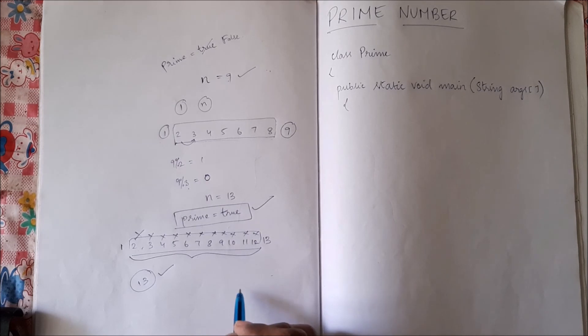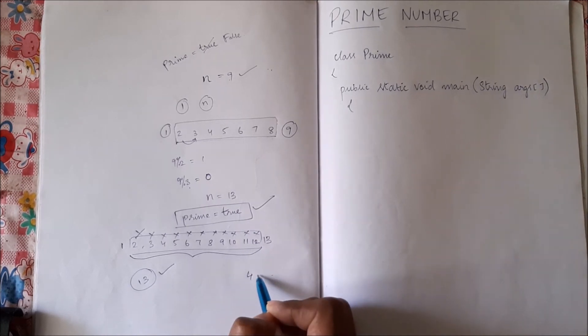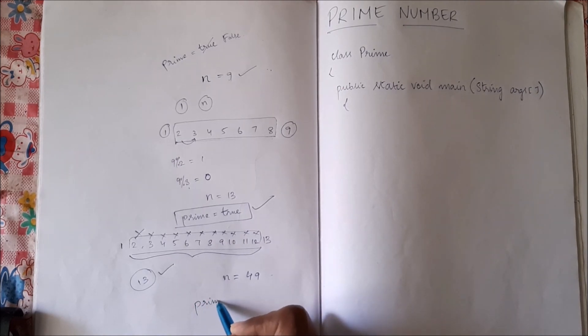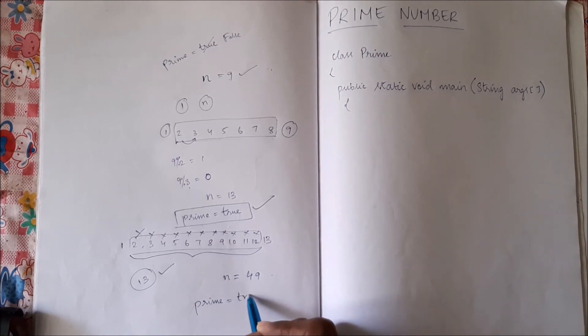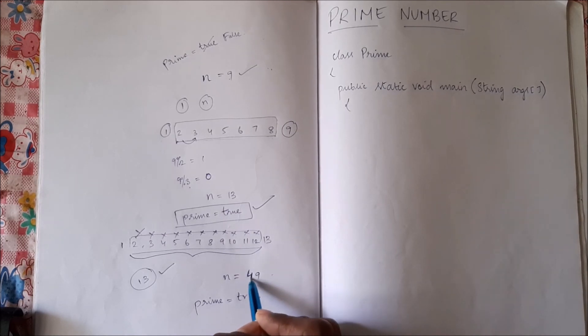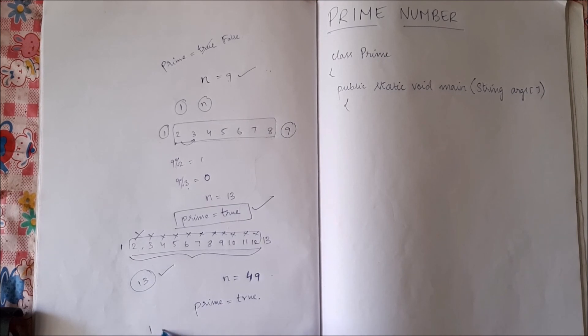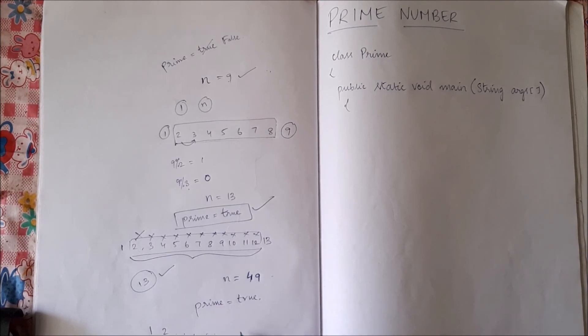Let us take one more example. Let us say example is 49. n is 49. We will assume it is a prime number. We have to check if 49 is divisible by numbers from 1 to 49.